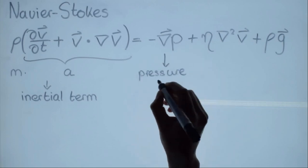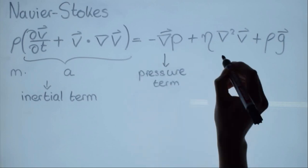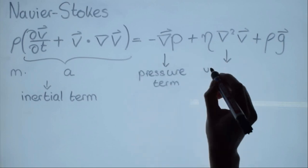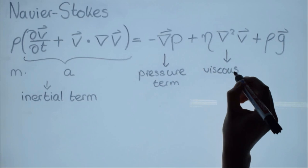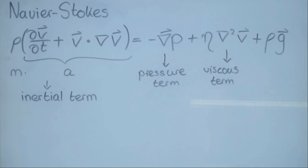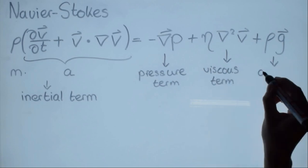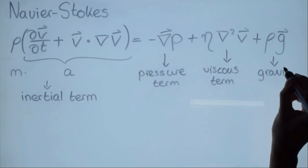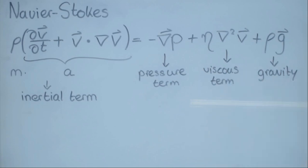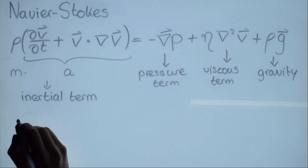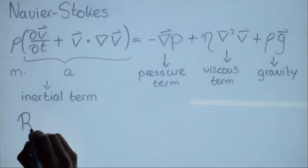The right-hand side can be seen as the sum of all the forces: a term for the force resulting from differences in pressure, a term for the viscous forces, and a term for the gravitational force acting on the fluid. Generally, we cannot solve this formula. Only in certain specific conditions can the equation be modified and solved exactly.